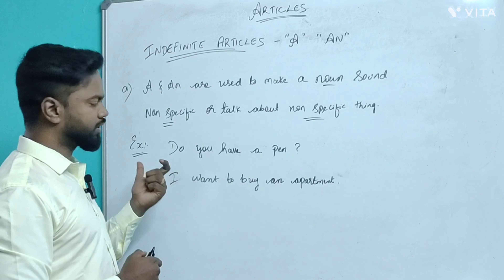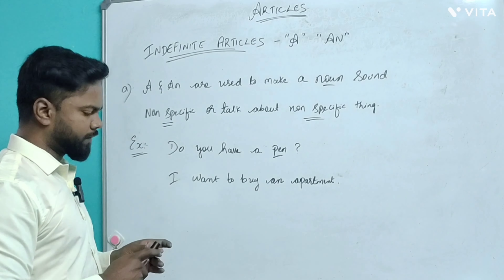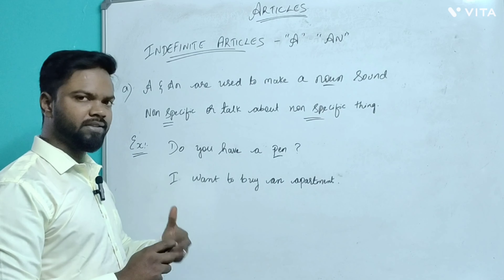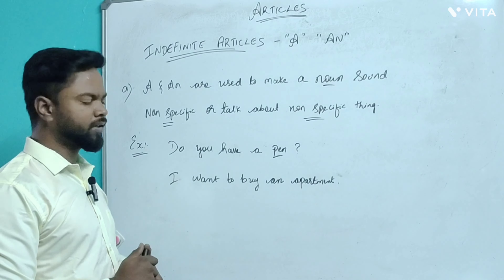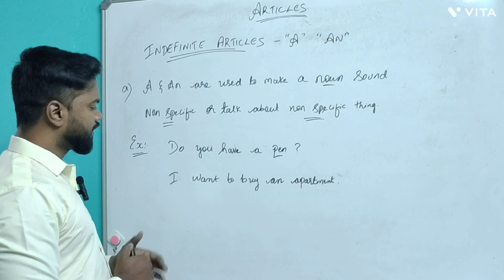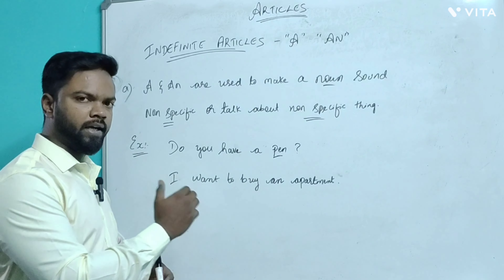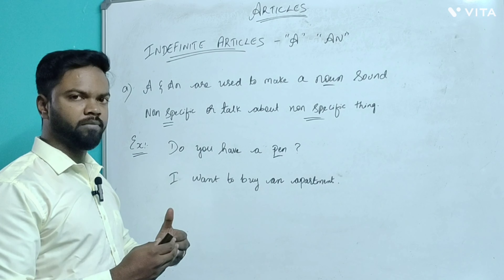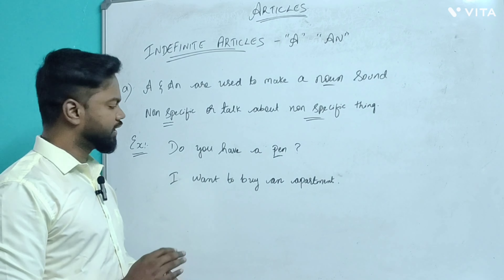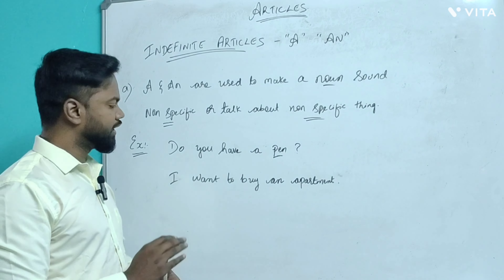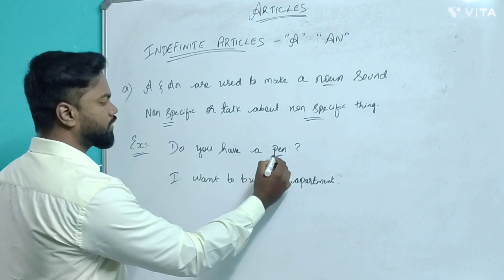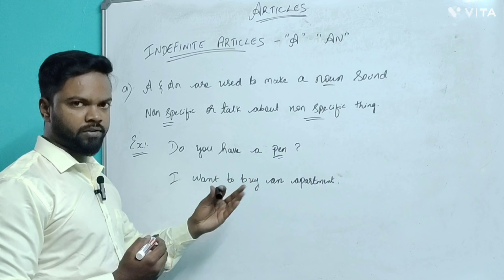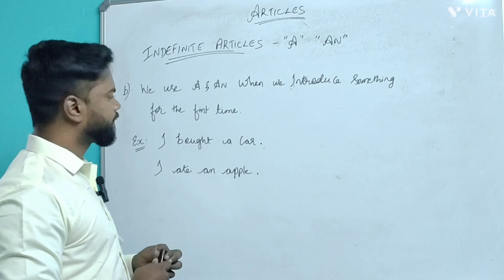Earlier we saw that definite articles make a noun sound specific, while indefinite articles make a noun sound non-specific or refer to a non-specific thing. For example: 'Do you have a pen?' Here, this is a non-specific thing — I'm not particularly mentioning that pen or this pen, just randomly asking if you have a pen.